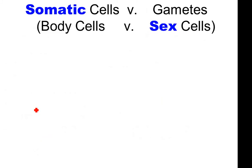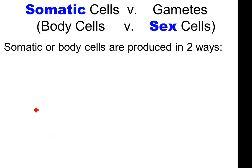First we need to know the cells that we're dealing with: somatic or body cells. Somatic cells include skin cells, hair cells, any cell that is not a sex cell. If it's not a sex cell — egg or sperm — it's a somatic cell, also called a body cell. The word to associate with body cells is the process that produces them: mitosis. The word to associate with sex cells is the process that produces them: meiosis.